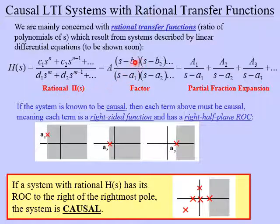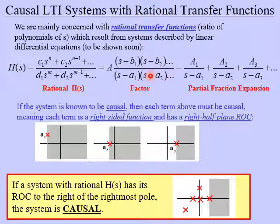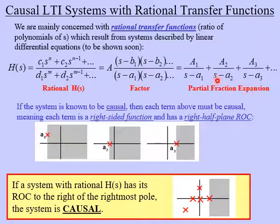Now we can always factor this. We can use a computer to find the roots of these polynomials and factor the numerator and denominator into a bunch of factors depending on the order of the two polynomials. Once we have those factors with roots B1, B2, A1, A2, and so forth, we could in theory perform partial fraction expansion and decompose this transfer function into a bunch of single terms.